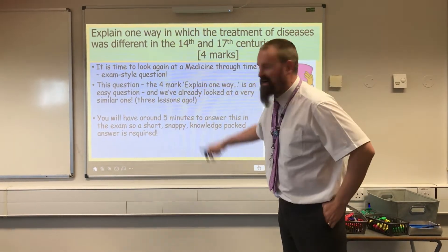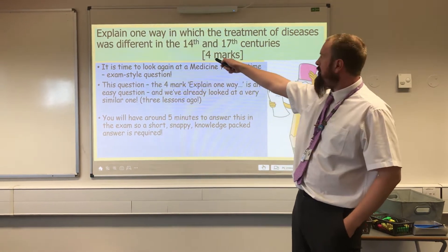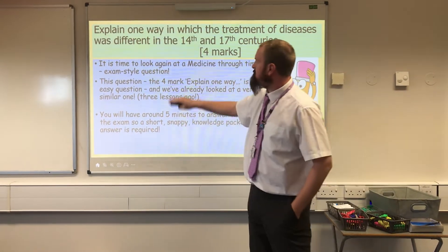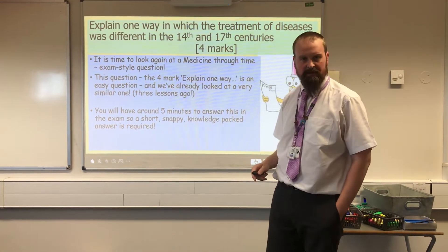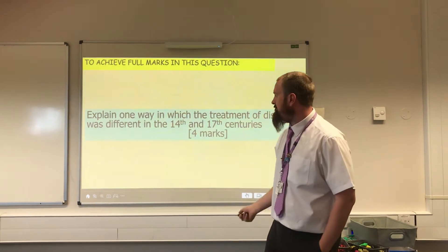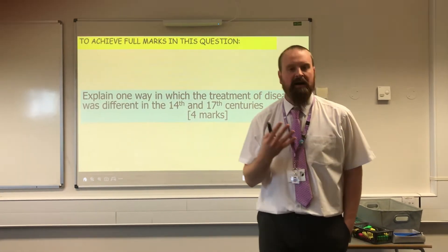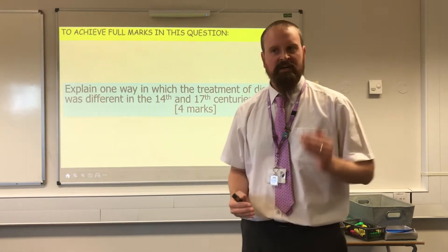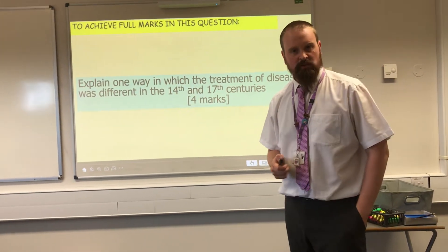We've got this question to look at very briefly today: explain one way in which the treatment of diseases was different in the 14th and 17th century. This is going to be available online for you, so I'm going to go straight on to our next slide to delve into how we get four out of four on this question. No matter what your target grade is, you should be aiming to get four out of four.